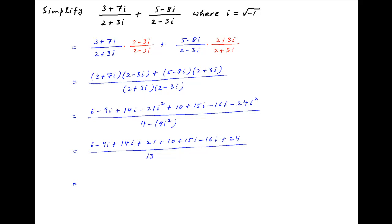Combining the real and imaginary terms in the numerator, we get 6 plus 21 plus 10 plus 24 which is equal to 61, and minus 9i plus 14i plus 15i minus 16i which is equal to plus 4i, divided by 13.